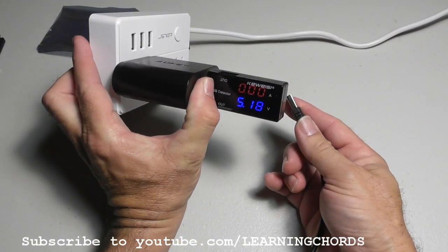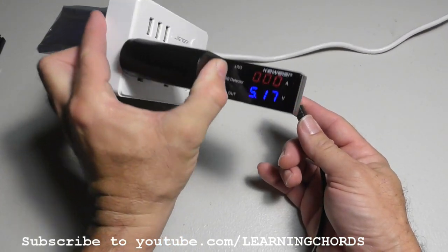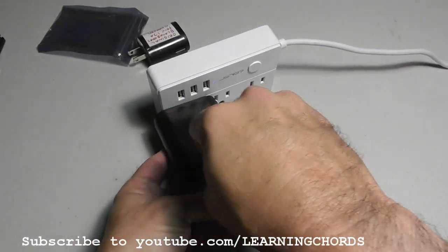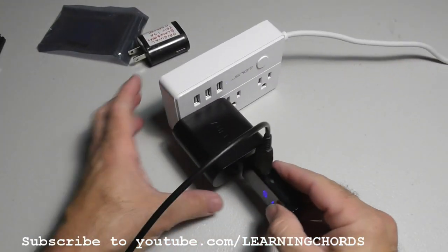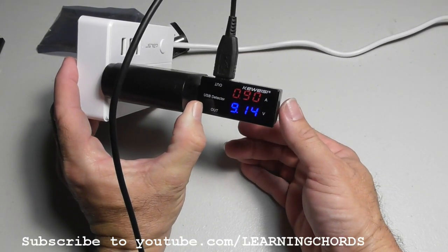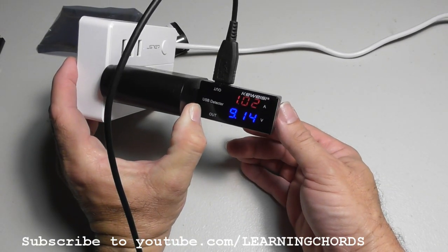Okay, now over here we're getting 5.17 volts with no current because we are not drawing any current yet. Okay so what do we have here? We've got 5.09 and we're almost at one amp, which I'm really surprised about.